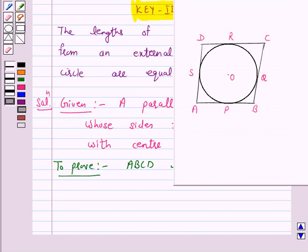Now we know that if all sides of a parallelogram are equal, then it is a rhombus. So, we have to prove AB is equal to BC, is equal to CD, is equal to DA.